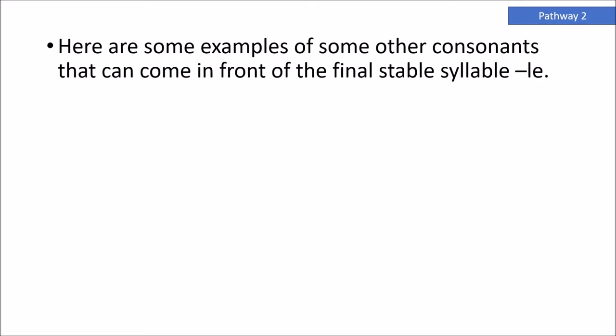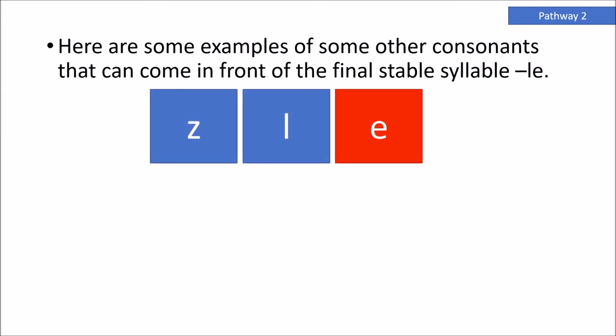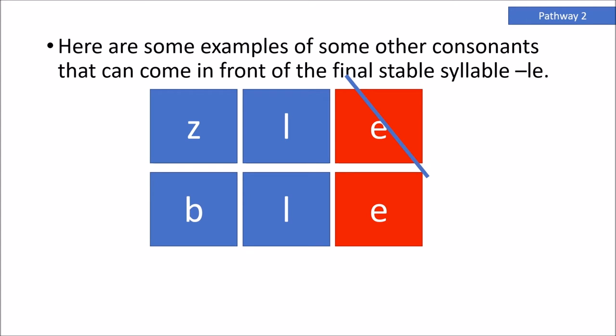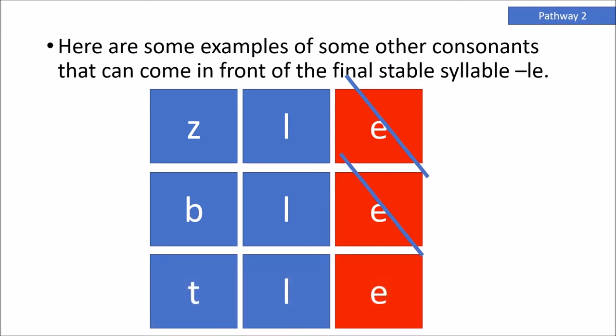Here are some examples of other consonants that can come in front of the final stable syllable, consonant LE. ZLE — I need to slash the E to indicate it's silent, and I would pronounce this syllable 'zl.' BLE — I'm going to slash that E to indicate it's silent, and I would pronounce this syllable 'bl.' TLE — I'm going to slash that E to make sure we know it's silent, and I would pronounce this syllable 'tl.'